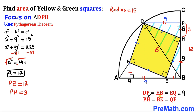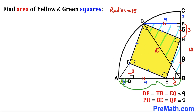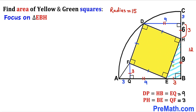We know PH = BE = QF, so all three equal 3 units. Therefore BE = 3 and QF = 3 as well. Also, CH is 6 and PH is 3, so CP must be 3. Likewise AQ = 3, since 3 + 9 + 3 equals the radius of 15.